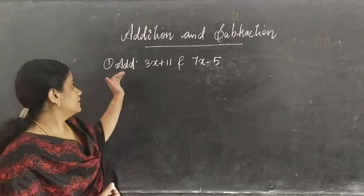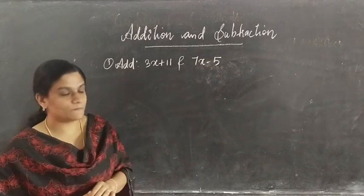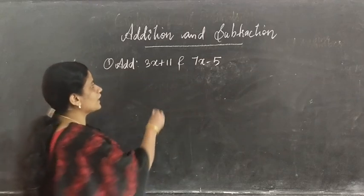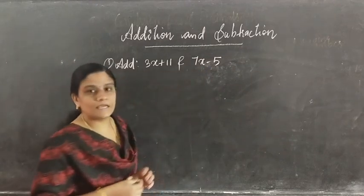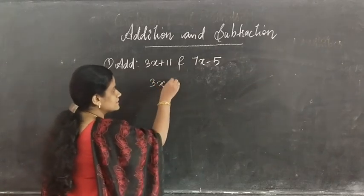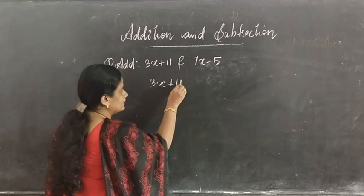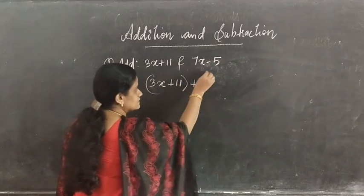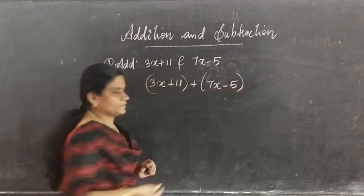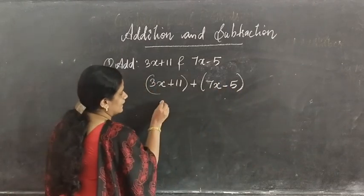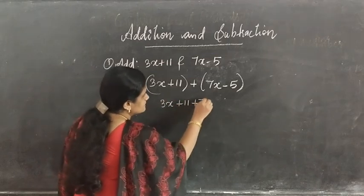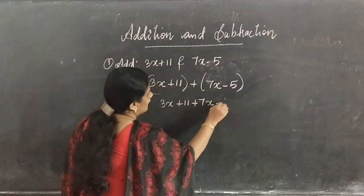The question is: add 3x plus 11 and 7x minus 5. We have to add these two algebraic expressions. So we write 3x plus 11, plus 7x minus 5. First we will open the bracket: 3x plus 11 plus 7x minus 5.